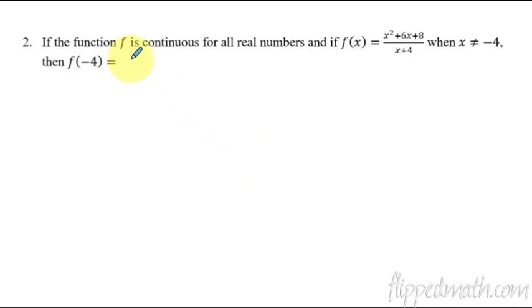So this first example, we're saying that f is continuous. Now f is continuous means there are no gaps in it. There's no jump discontinuities, vertical asymptotes, no holes, nothing. So it's continuous in one continual step here. And it's saying that this is what the function is when x is not equal to negative 4. So besides the point negative 4, this is what the function is.